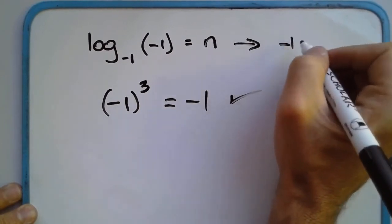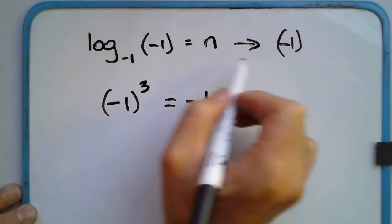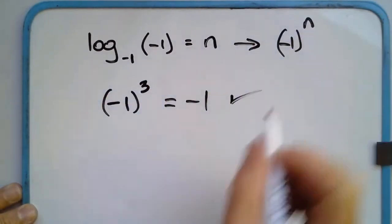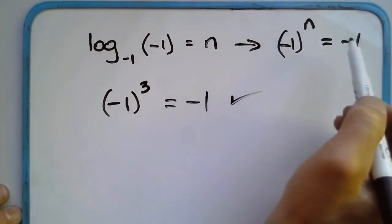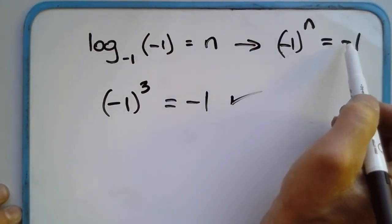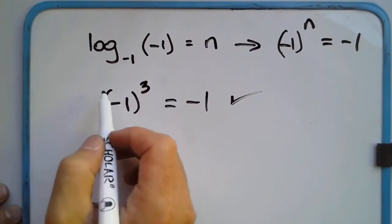So just for those that would like to see this in a little bit more detail, writing this in exponential form, negative 1 to the power of n is equal to negative 1. Can we find an n such that this works? Most certainly. In fact, n can be any odd integer, and that would be the solution to this.